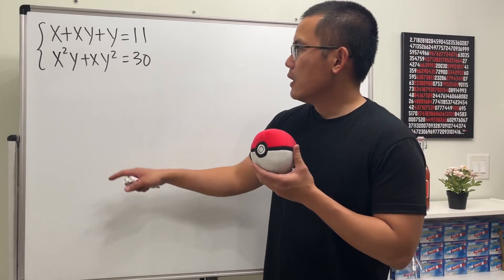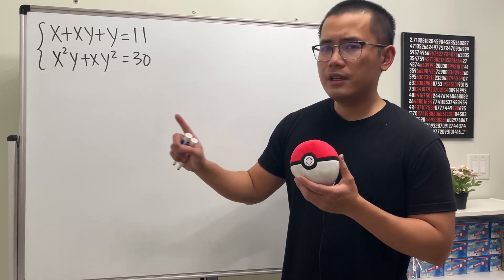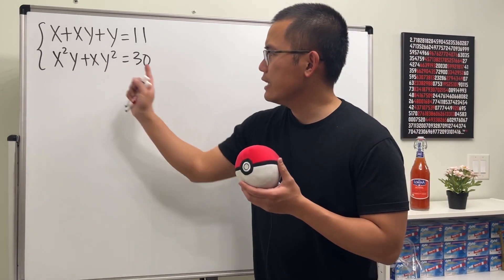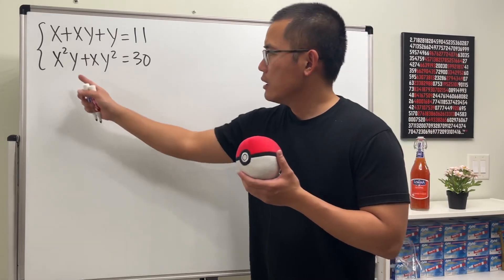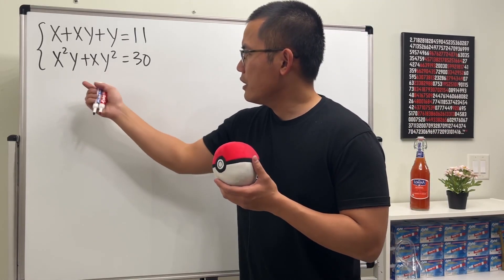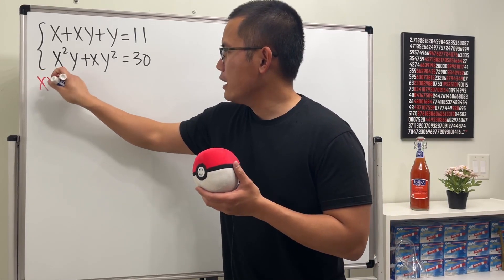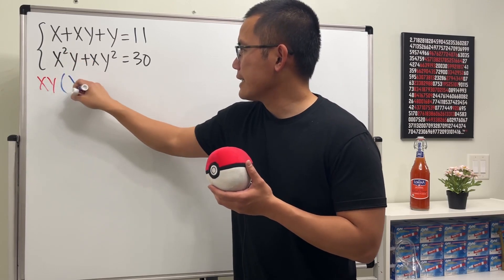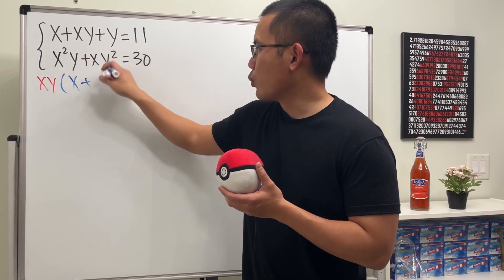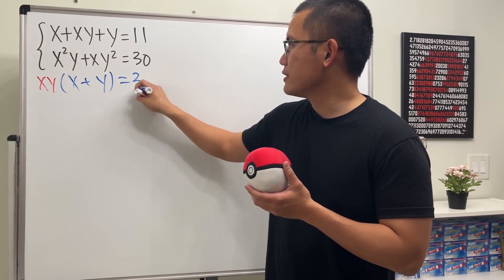Let's look at the second equation — we can do some factoring. From here, let's factor out xy, and then we will get x plus y, and that will be equal to 30.